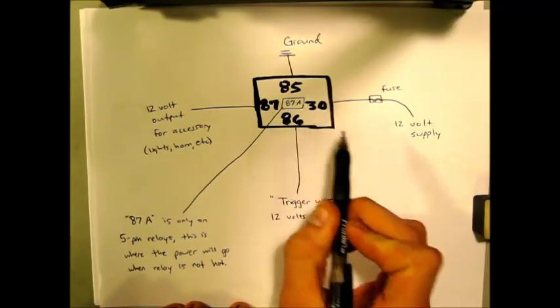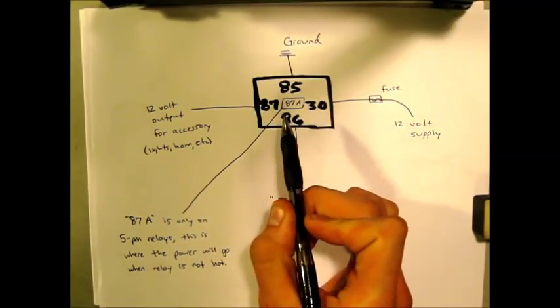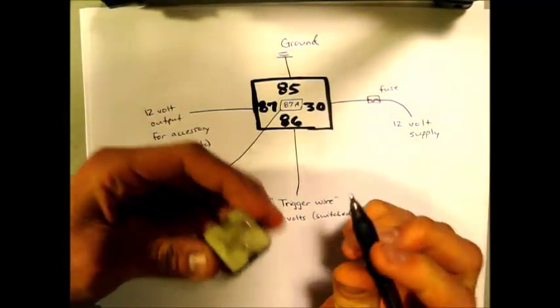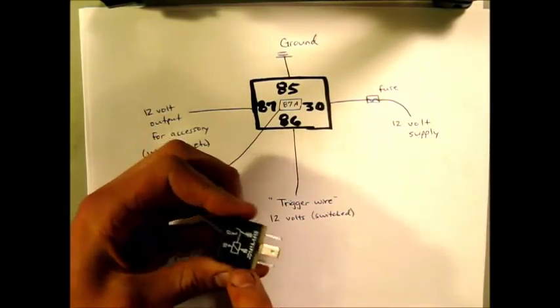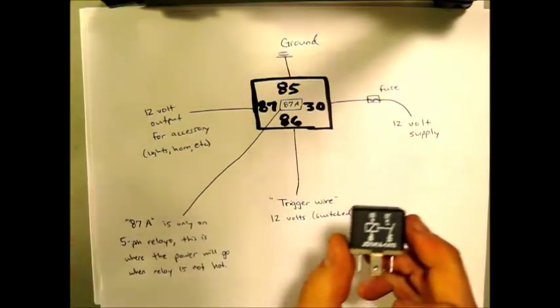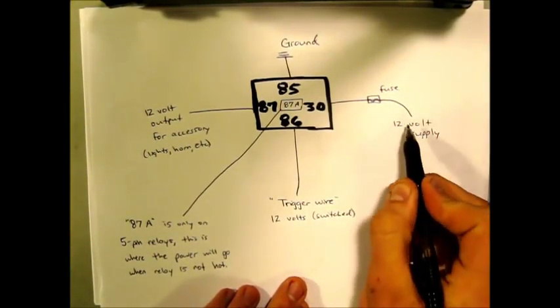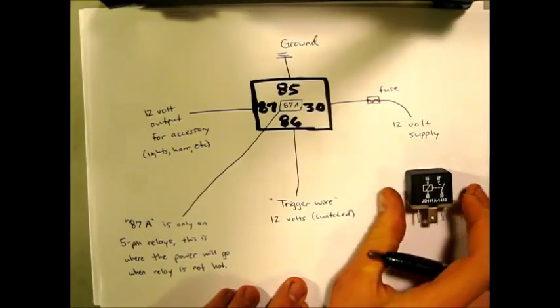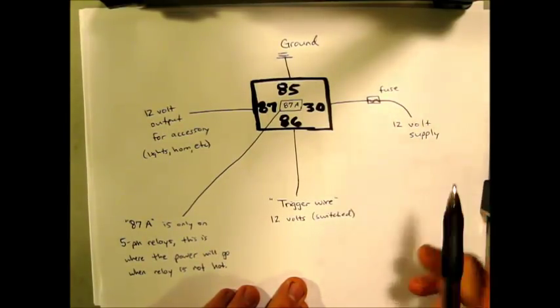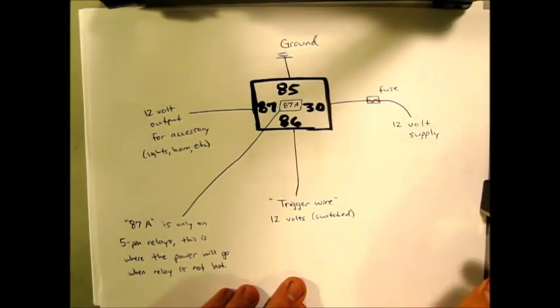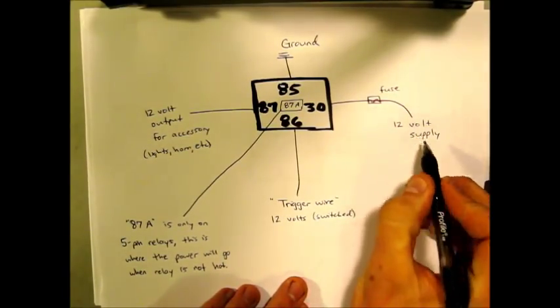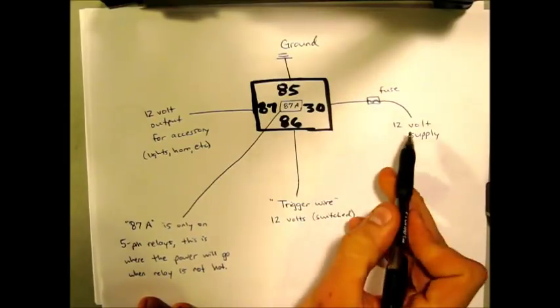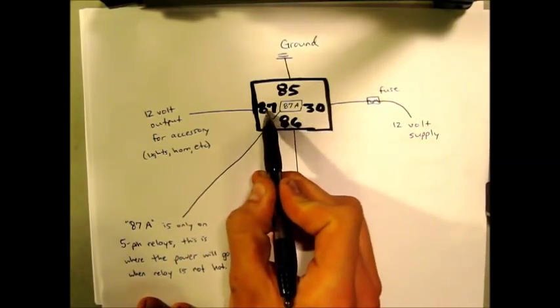Your other prongs here, 30 and 87, are going to be for your actual accessory. The 30 is going to be where your 12 volt supply comes in. Typically you're going to want to fuse that with something like a 15 amp fuse, or just under what the relay is capable of supporting. This can apply to fans, lights, horns, whatever. The 87 is going to be your output. So once you flip your switch, it's going to bridge the 30 to the 87, and then you're going to have 12 volts right here and that's going to turn on your lights.